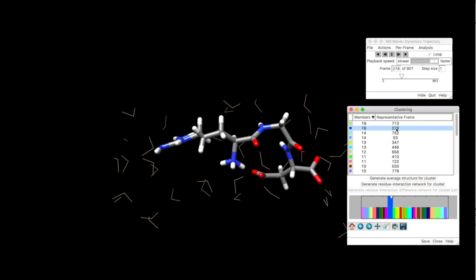And what you can do with this information, you can generate average structure for the cluster. Now if you have thousands of different conformations, you can group them. And you can find out what is the prevalent conformation for your system during the simulation time. So this tool can enable you to do that.